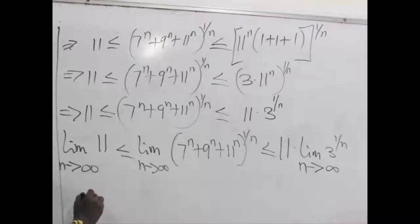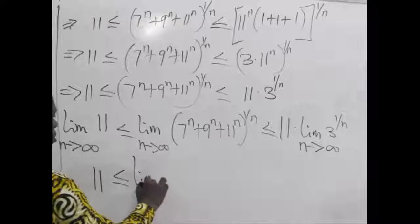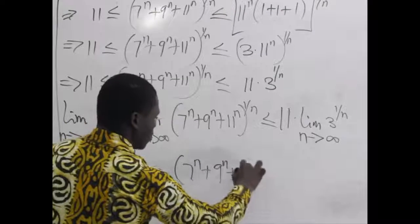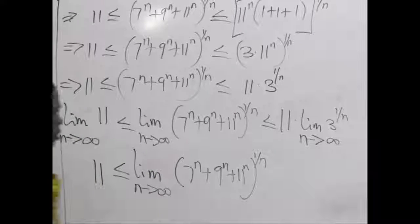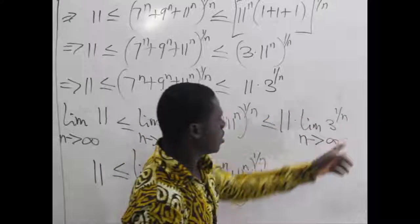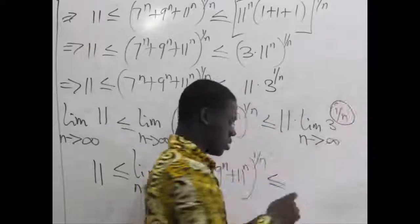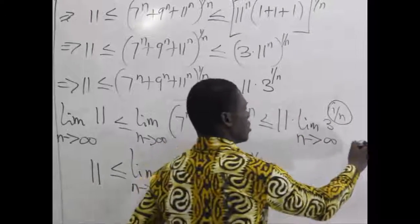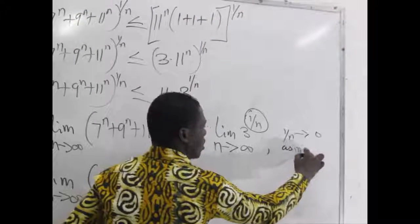So the limit of a constant is a constant. So here the result is 11, which is less than or equal to, we don't know this yet, so we still write it as we have it. For this particular one on the right, realize that as n approaches infinity, the exponent 1/n approaches 0. So this one is approaching 0.